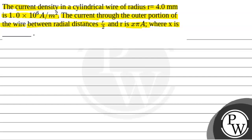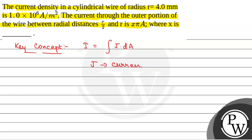We will solve this question. First of all, we will see what will be the key concept used to solve this question. The key concept is that current is given by the integration of j·dA, where j is the current density and dA is the area element through which current is to be calculated.